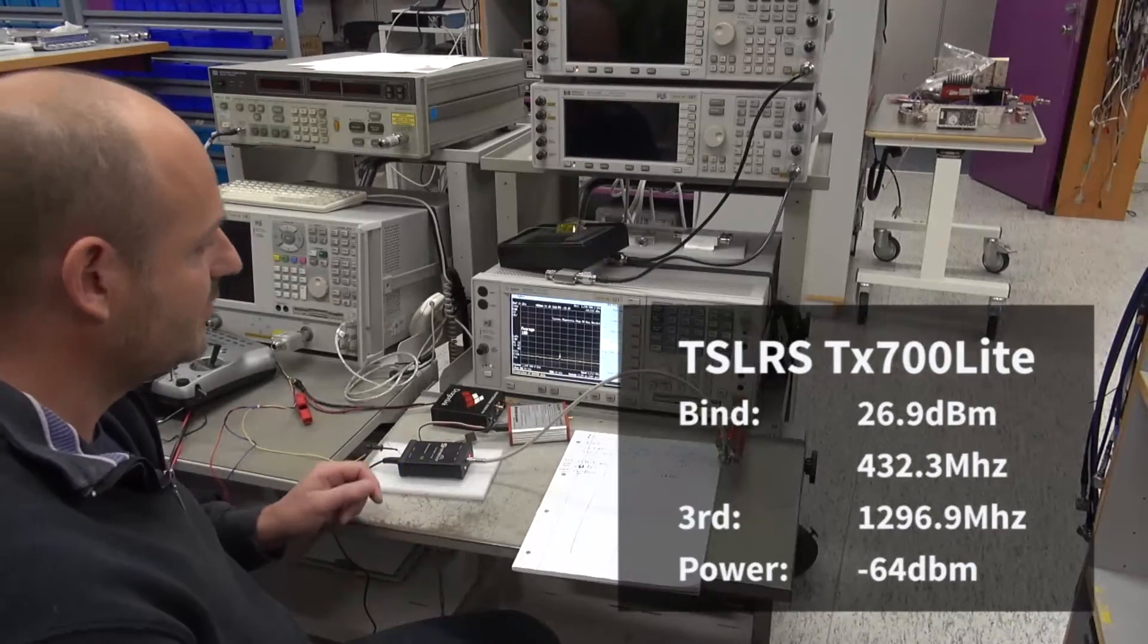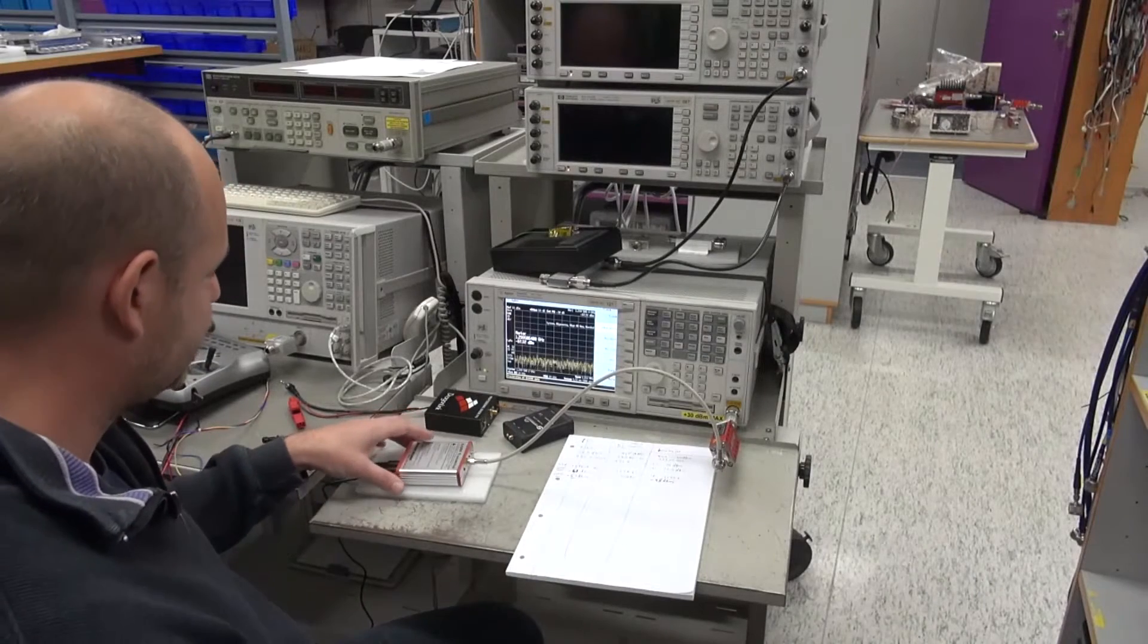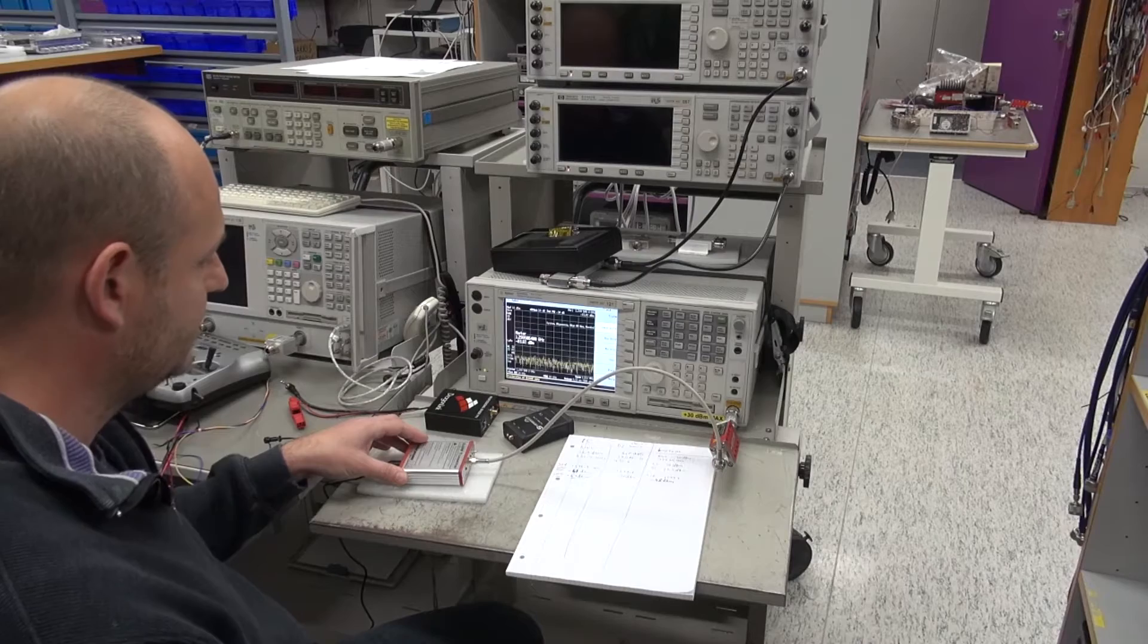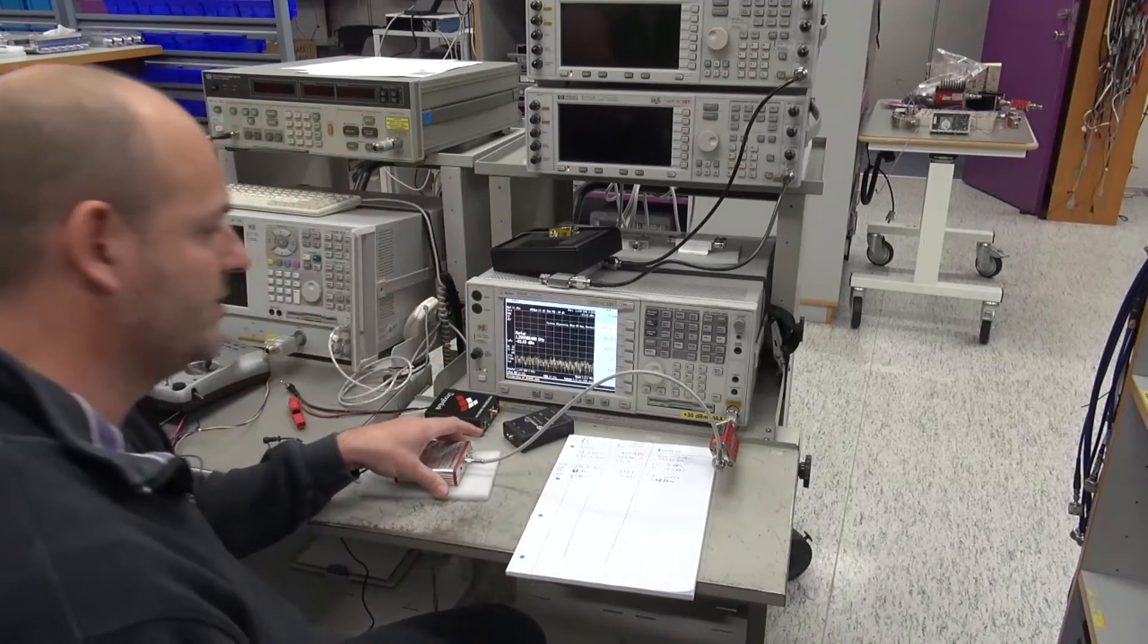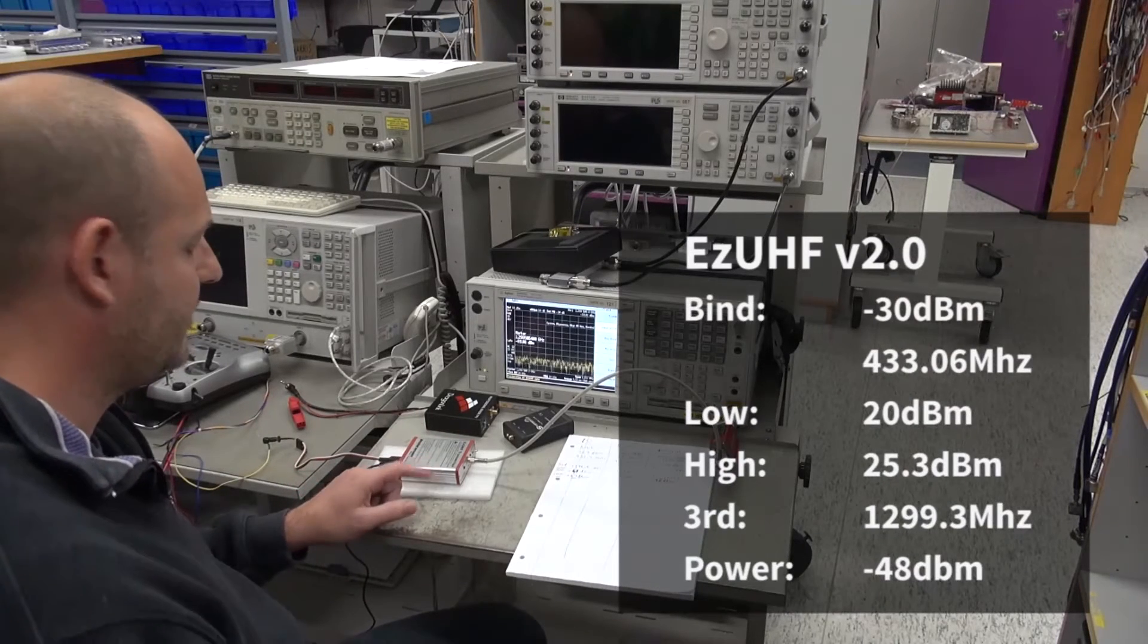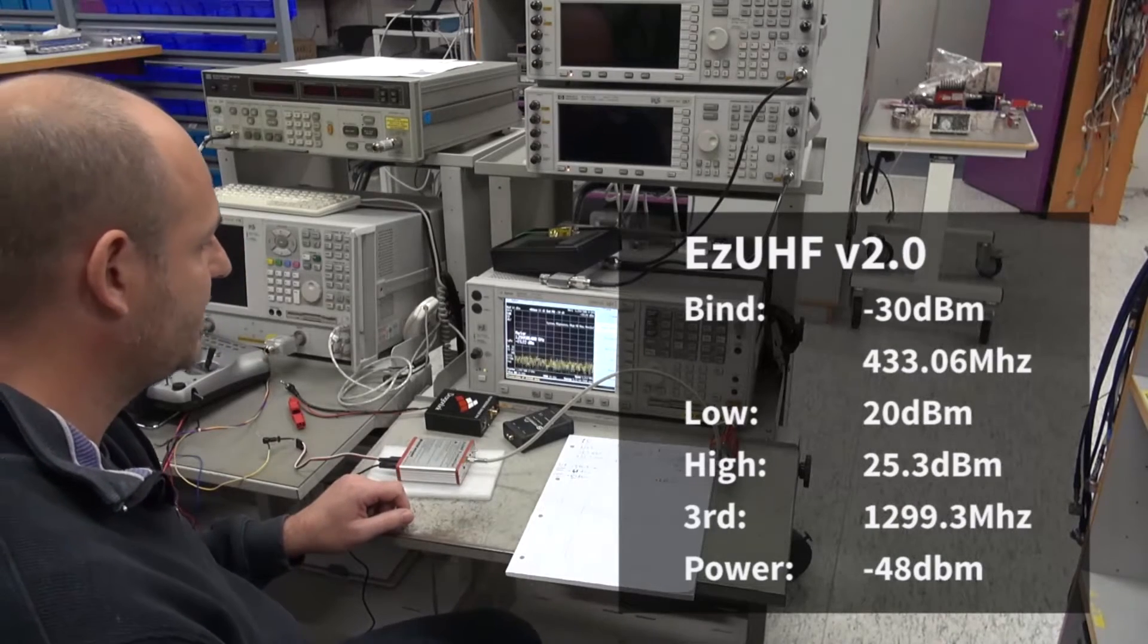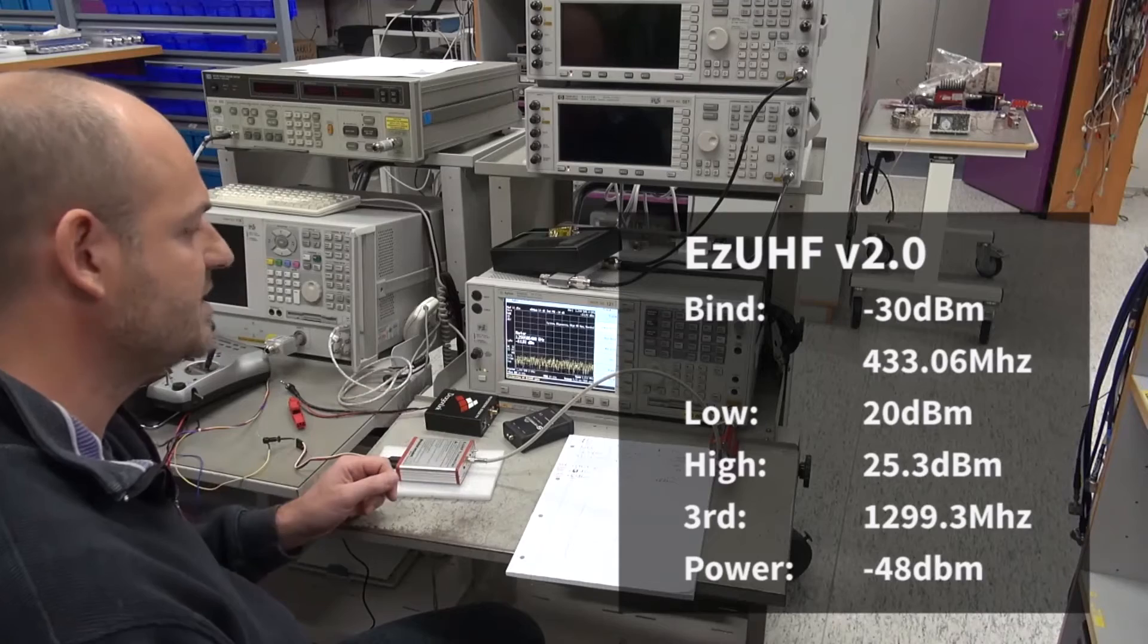Let's compare with the others. We got this nice transmitter connected, it's from Immersion, and we put it into high power mode. In high power mode we found out the transmitter's output power is 25 dBm, and in low power mode it is 20 dBm.